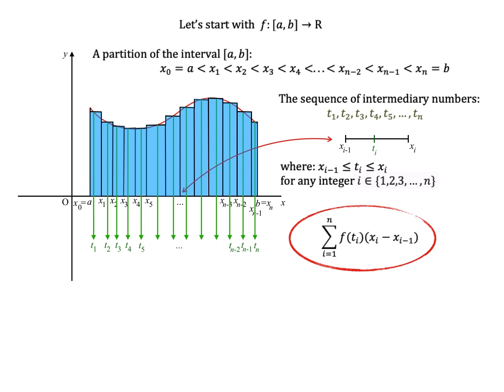Now this is the Riemann sum, the sum of n surface areas of the rectangles that can be built using a partitioning of a, b into n subintervals.